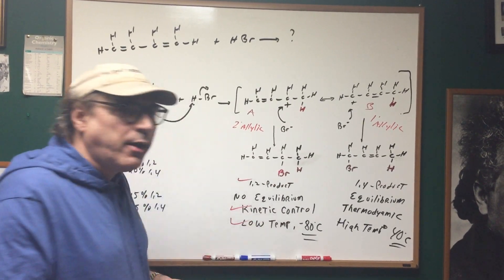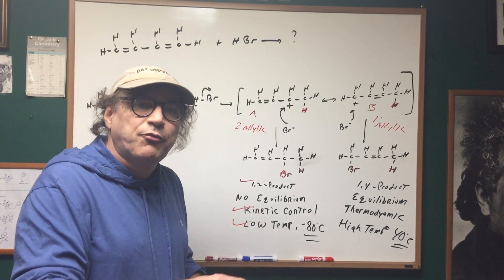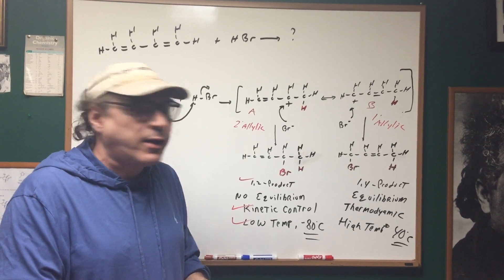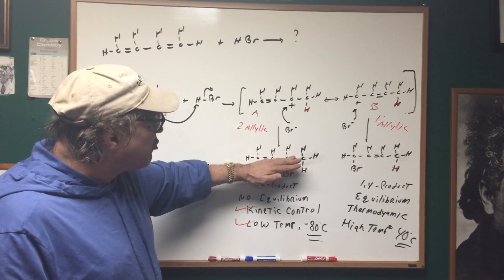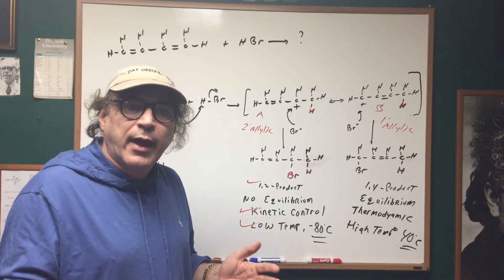And this is our low temperature, but there's no equilibrium established. Once you go over the energy hump, the reaction is over. There's not enough energy to go back. So the major product was formed from the more stable carbocation, and that's the fastest.